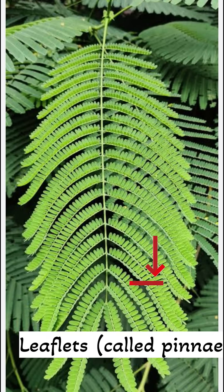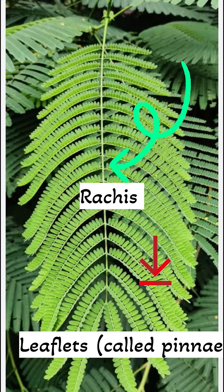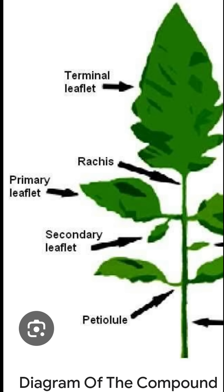These are some of the examples of plants with pinnately compound leaves. The leaflets, called pinnae, are attached to the rachis in pairs or alternately. Each leaflet has its own stalk, called the petiolule, or may be sessile. The rachis may terminate in a single leaflet or in appendages.